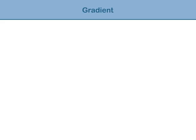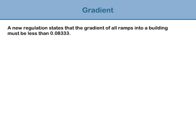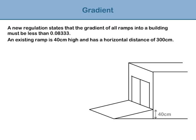Let's look at an example. A new regulation states that the gradient of all ramps into a building must be less than 0.08333. An existing ramp is 40 centimeters high and has a horizontal distance of 300 centimeters. Does this ramp satisfy the new regulations?